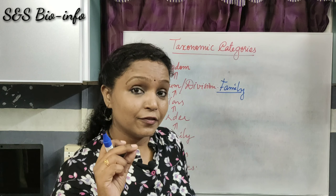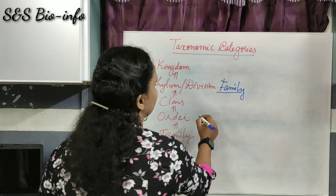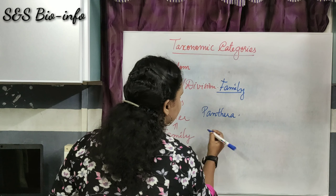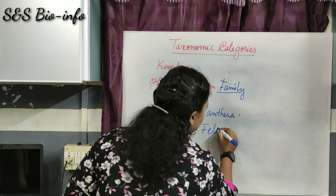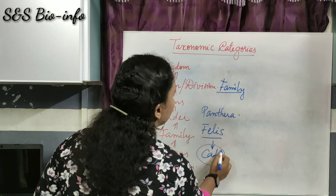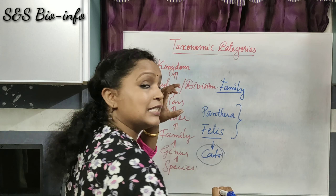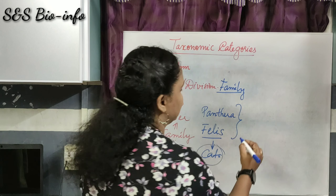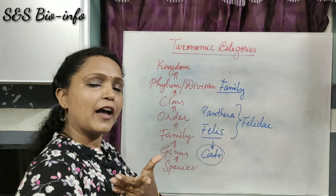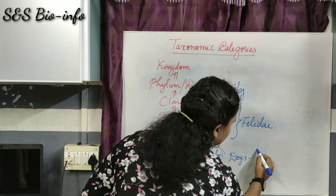Felis is the genus of cats. These two related genera — Panthera and Felis — come under the same family Felidae. Also, Canidae is the family of dogs; dogs come under the family Canidae.